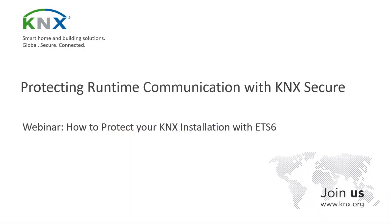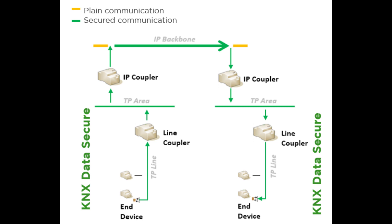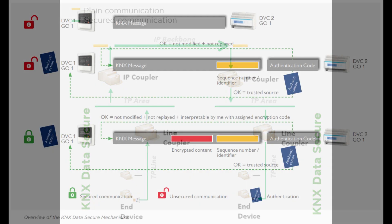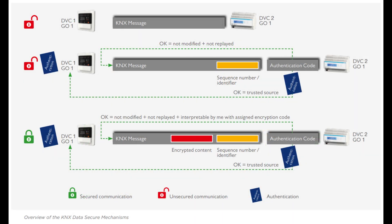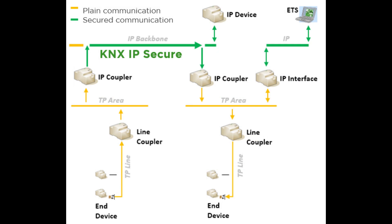Next to the before-mentioned measures, KNX runtime communication can be protected via the specified KNX Data Secure and KNX IP Secure mechanisms. KNX Data Secure ensures that, regardless of the KNX medium selected, messages sent by KNX devices can be authenticated and/or encrypted. Even in the case where such communication would not be secured and such networks would be connected to IP, the KNX IP Secure mechanisms were defined on top of this.